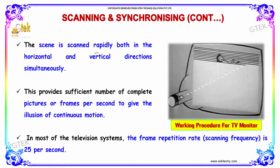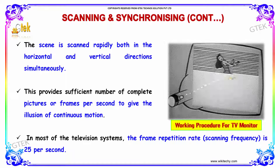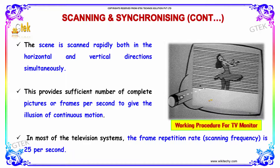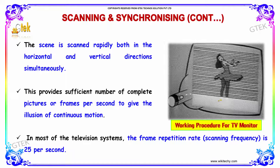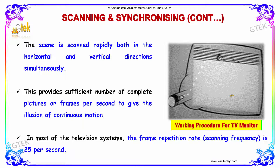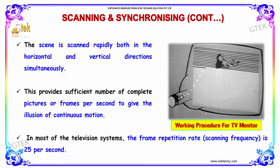The scene is scanned rapidly both in the horizontal and vertical direction simultaneously. This provides a sufficient number of complete pictures or frames per second to give the illusion of continuous motion. In most television systems, the frame repetition rate is 25 per second.